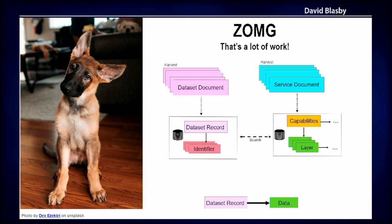It's not easy to go from a dataset metadata record to a service. You have to process all the service records and process all the capabilities documents before you start doing the matching step. There are a lot of special cases because everybody has a snowflake way of doing things, so it can be quite difficult.